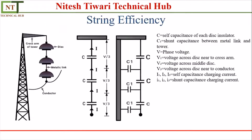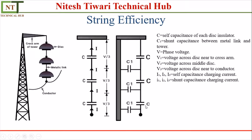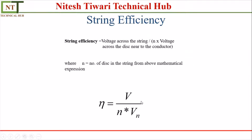As we know, if there are insulators of multiple levels, a self capacitance and a shunt capacitance will be generated. The formula for string efficiency is V divided by n into Vn — that is, the voltage across the string divided by n times the voltage across the disc nearest to the conductor. Using this formula we can calculate the string efficiency.